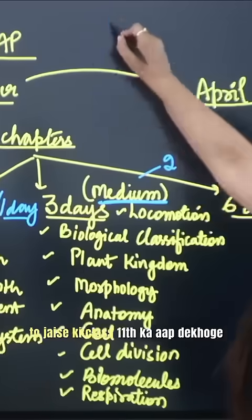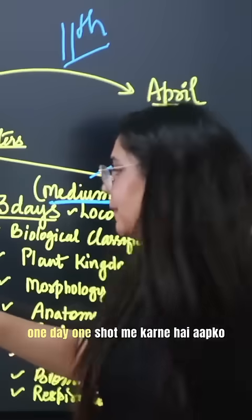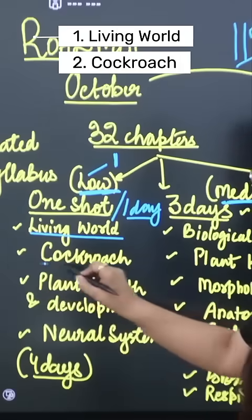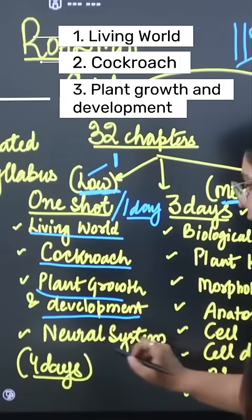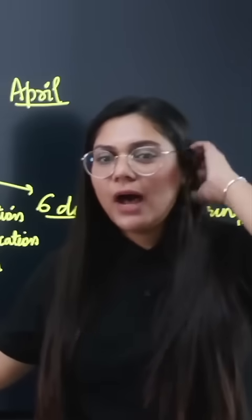As you will see Class 11, I have written in this slide. You have to do some chapters in one day, one shot. You have to do Living World, Cockroach, Plant Growth and Development, and Neural System. These chapters were very big, but since they have been cut back, you can complete them in one day.